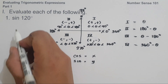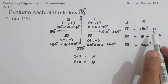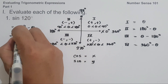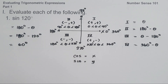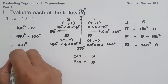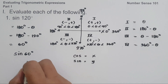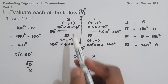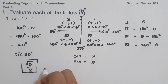On the first example, we have sine 120 degrees. Since 120 is located in the second quadrant, we use the reference angle formula: 180 degrees minus theta. So 180 degrees minus 120 degrees gives us 60 degrees. The reference angle of 120 degrees is 60 degrees, so it gives us sine 60 degrees. The value of sine 60 degrees is square root of 3 over 2. Since 120 degrees is in quadrant 2, the y-value is positive, so our answer is positive square root of 3 over 2.